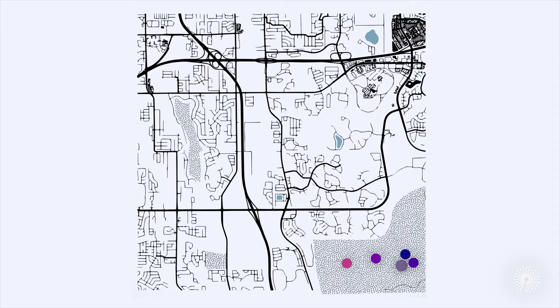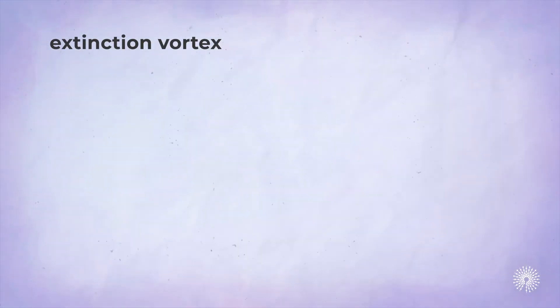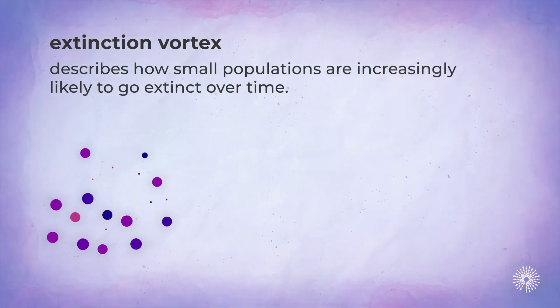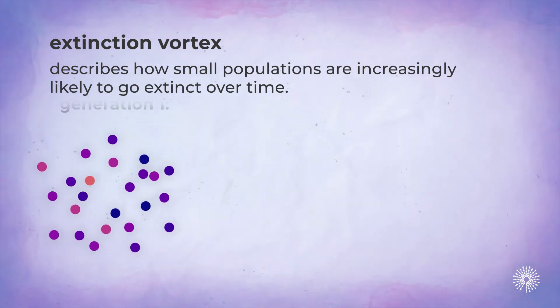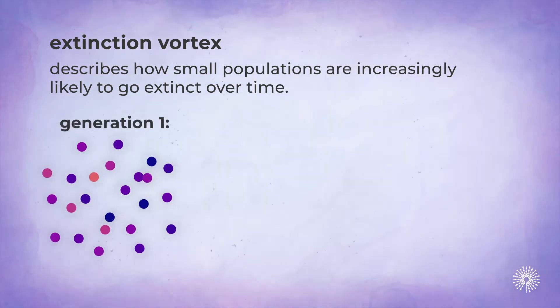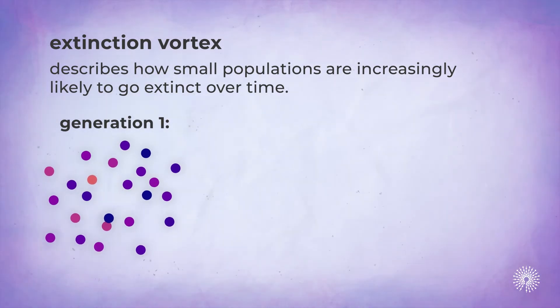At this point, the population is susceptible to what ecologists call the extinction vortex. This is a model that describes how small populations are increasingly likely to go extinct over time. After centuries of targeted hunting and habitat loss, the entire eastern puma population was reduced to about 24 genetically similar inbred individuals in Florida.